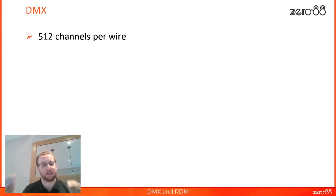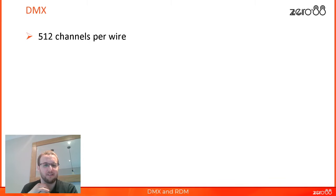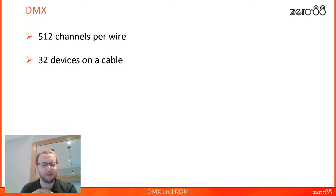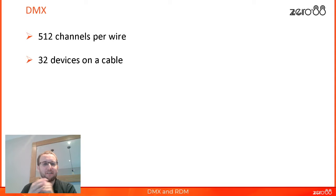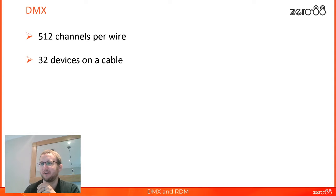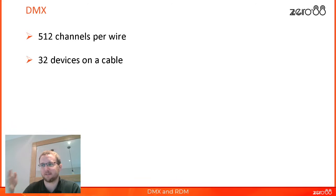On that cable, the official rule is 32 devices. This is not set in stone nowadays — equipment is much better quality and you can generally go above 32 without too much of an issue. But officially it's 32. Unlike the 512 channels, which is very much set in stone — you cannot get 513 channels down a cable — you could probably have 33 or 34 or significantly more devices. But if you want to do everything to the book, keep it in the 30s maximum on a cable. DMX daisy chains through devices, so each device is one of those.